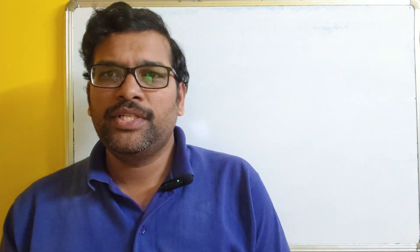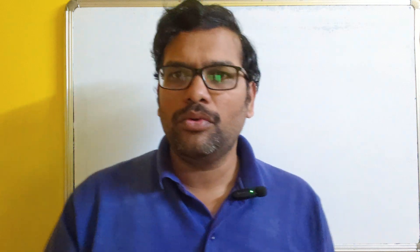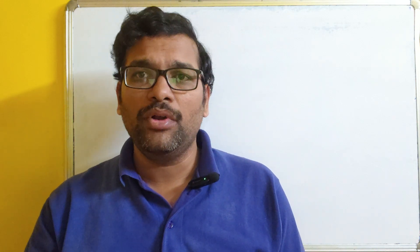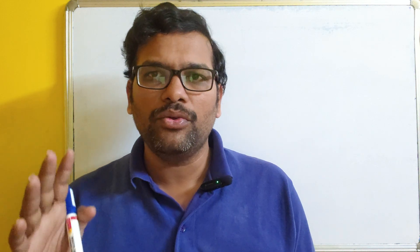Hello friends, welcome back to our channel. Today we will see one more concept in discrete mathematics, that is Euler's formula. In our previous session we have seen two concepts: Euler's path, Euler's circuit and Euler's graph, and similarly Hamiltonian path, Hamiltonian circuit and Hamiltonian graph. Hamiltonian circuit concentrates on visiting each vertex exactly once, and Euler's circuit concentrates on the edges — we have to visit all the edges exactly once.